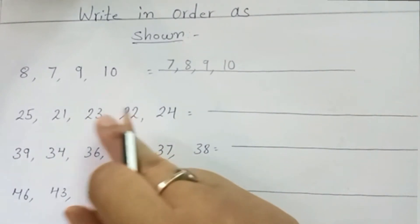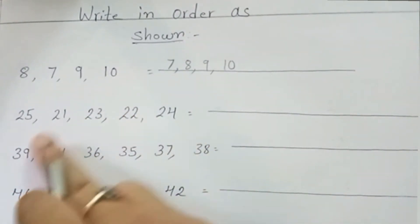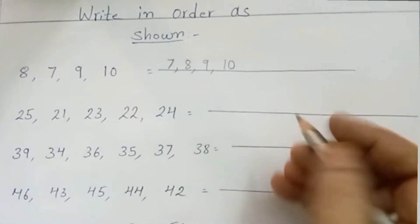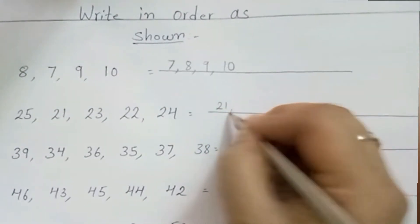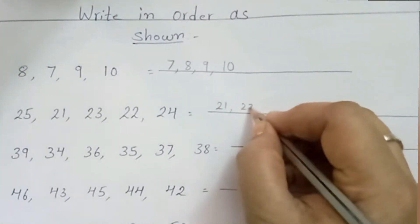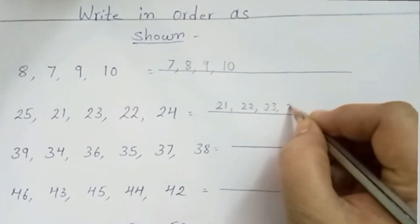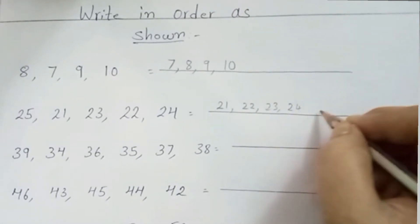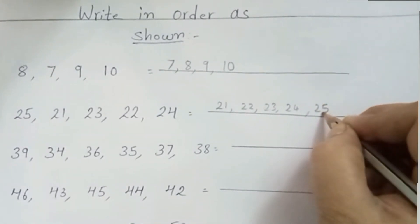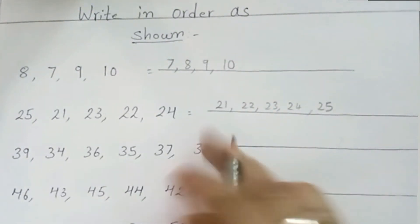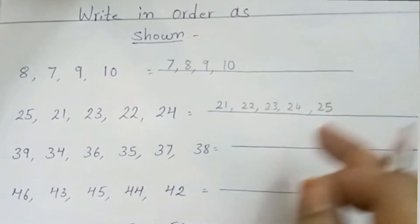In the second line, which is the smallest number children? 21. So you have to write here 21, then 23, 24, and 25. So you have to write small to big. Understood children?